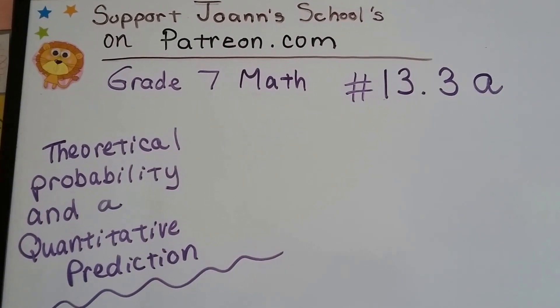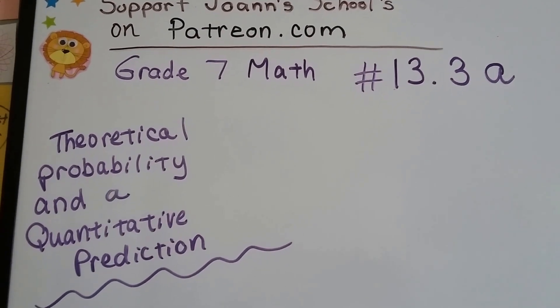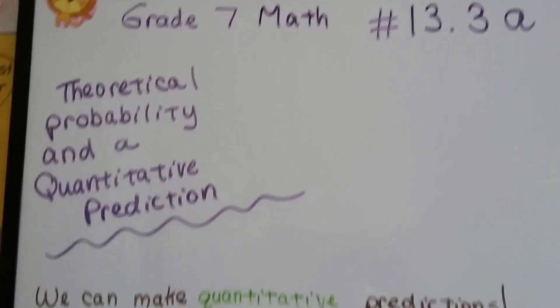Grade 7 math number 13.3a, Theoretical Probability and a Quantitative Prediction.